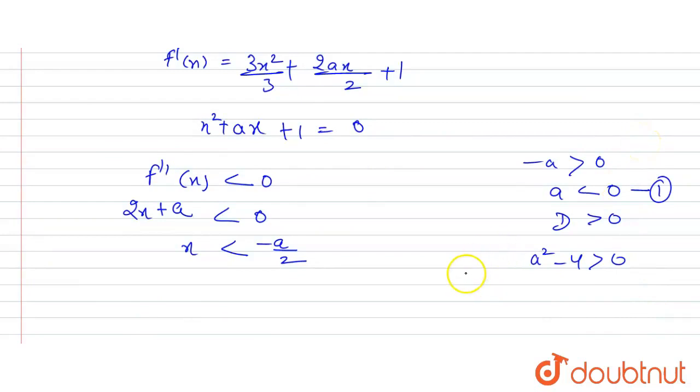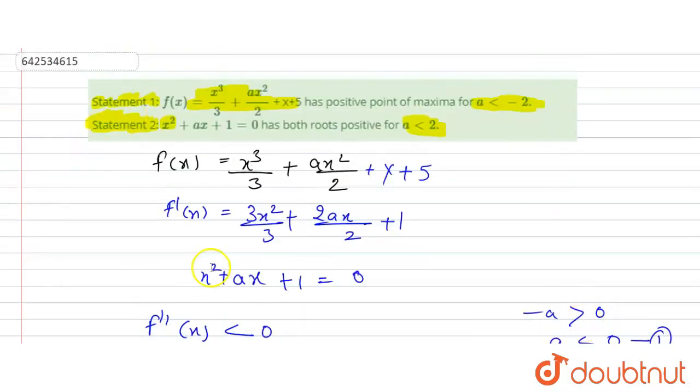This means a belongs to (-∞, -2) ∪ (2, ∞). Got it? I hope you understood it. Thank you.